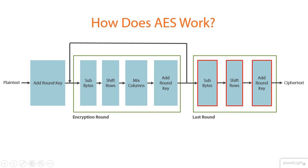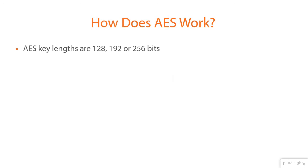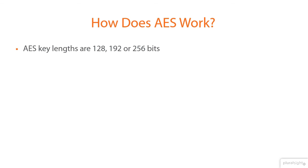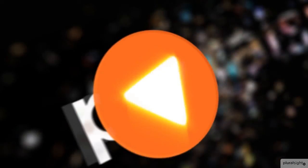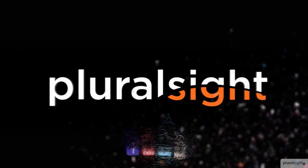Then there is a final round where the sub-bytes, shift-rows, and add-round key steps are repeated — there is no mix-column step included here. As previously mentioned, the allowable key lengths in AES are 128, 192, and 256 bits. Every key is expanded so that a separate sub-key could be utilized for each round.